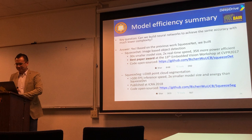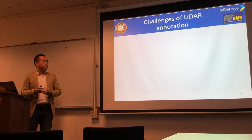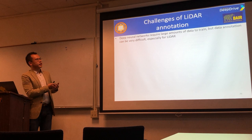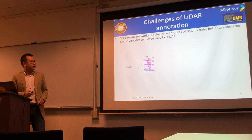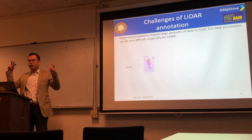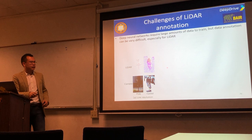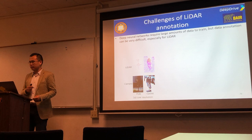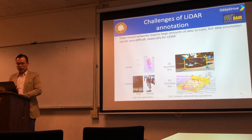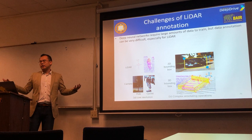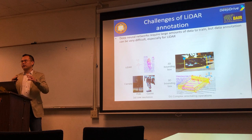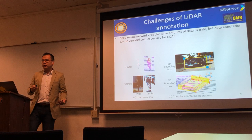Now let's talk about data efficiency. Neural networks require large amounts of data to train, but data annotation can be very difficult, especially for LiDAR. LiDAR has very low resolution — it's very difficult to tell what objects are from the point cloud alone until you see the corresponding image. Even if you know what an object is, drawing point-wise labels is not feasible, and even 3D bounding boxes are operationally complex with more degrees of freedom. Therefore, annotating LiDAR point cloud is hard.